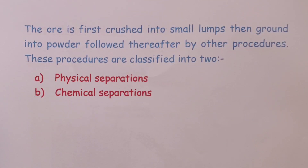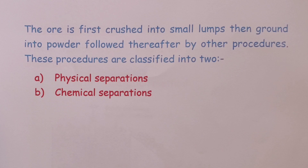The ore is first crushed into small lumps, then ground into fine powder, followed thereafter by other procedures. These other procedures are classified into two: physical separations and chemical separations.